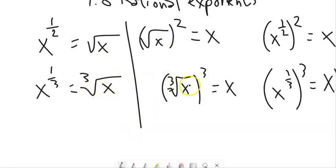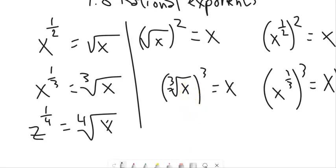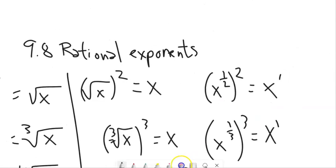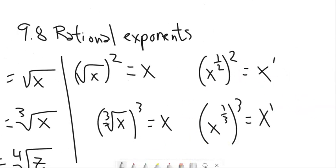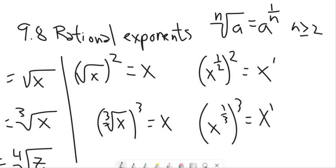In general with rational roots: if I have z to the 1/4 power, that means we're taking the fourth root of z. So in general, the nth root of some base a is the same as a to the power of 1/n, as long as n is greater than or equal to 2.